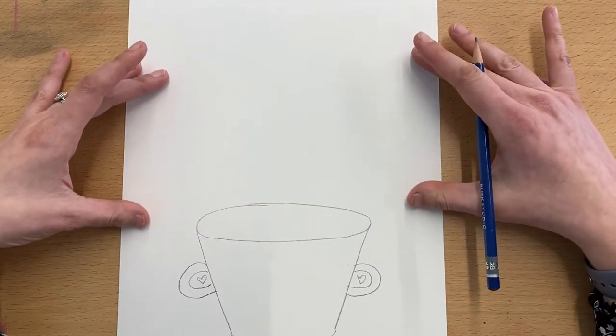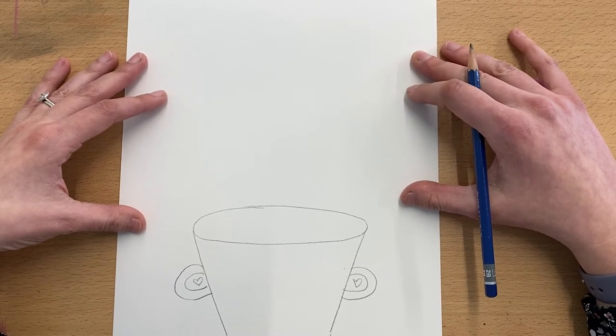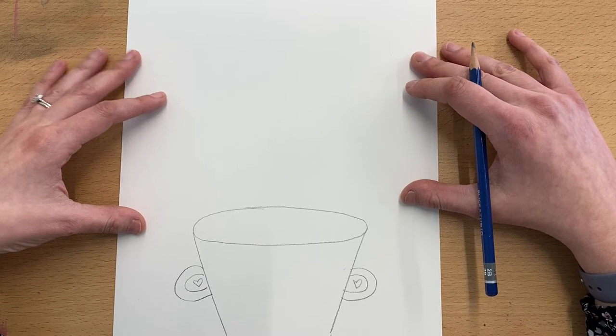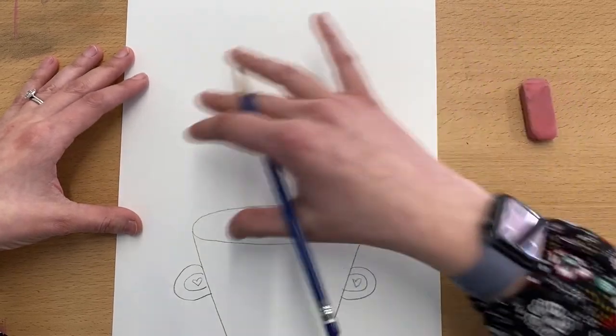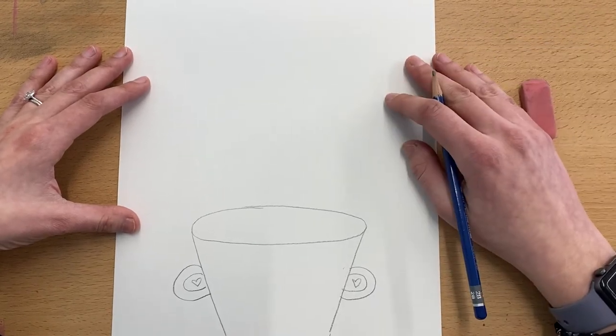All right, and then we want to get started on the actual flowers. Now Heather Goller when she's doing her artwork starts off with some pretty simple shapes. So what I'm going to have you do first is draw a couple different circles in this area. We'll worry about the stems in just a moment.